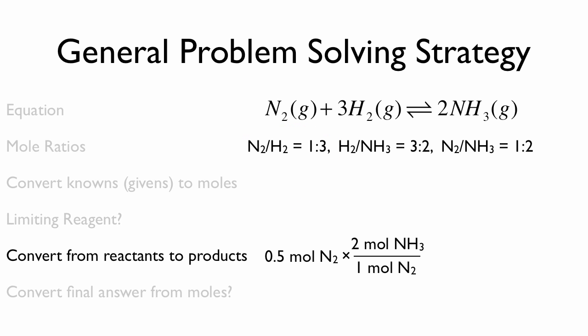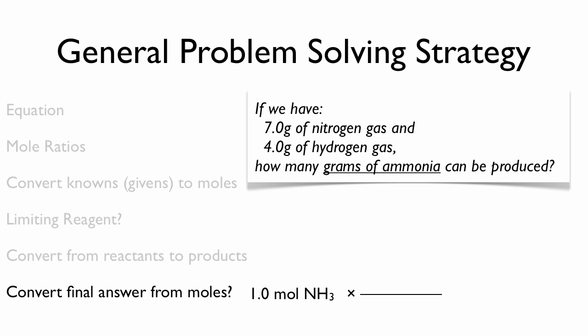For every mole of nitrogen that goes in, 2 moles of ammonia come out. But, of course, the problem asked for grams of ammonia. So here, we need to multiply by the molar mass of ammonia.